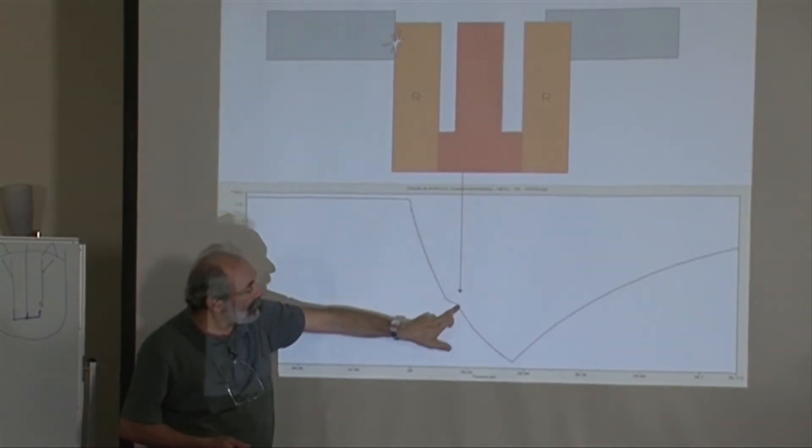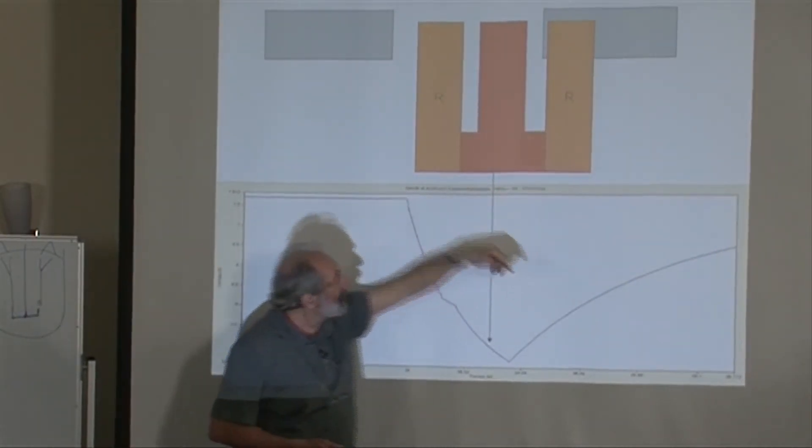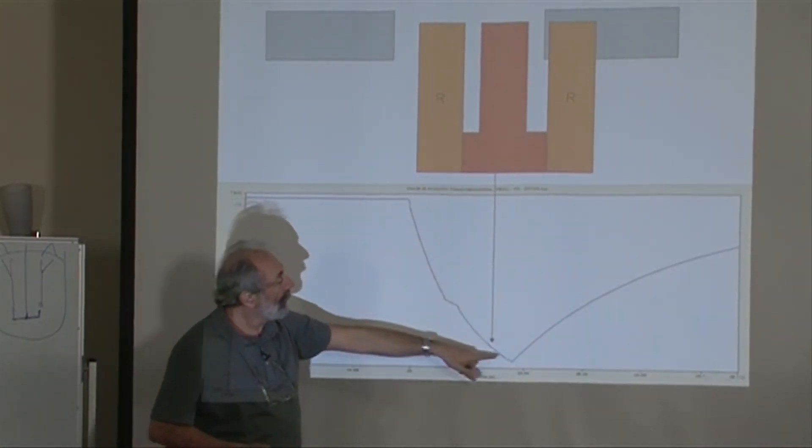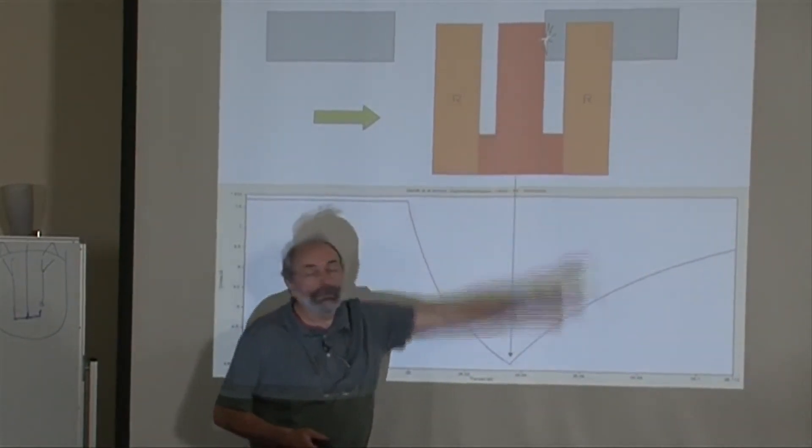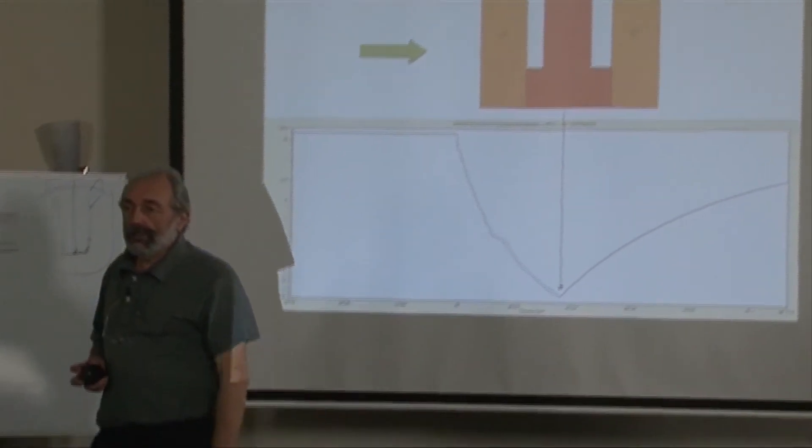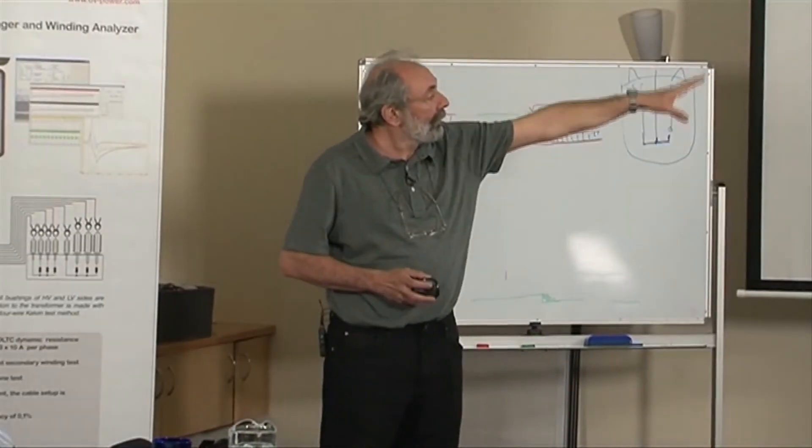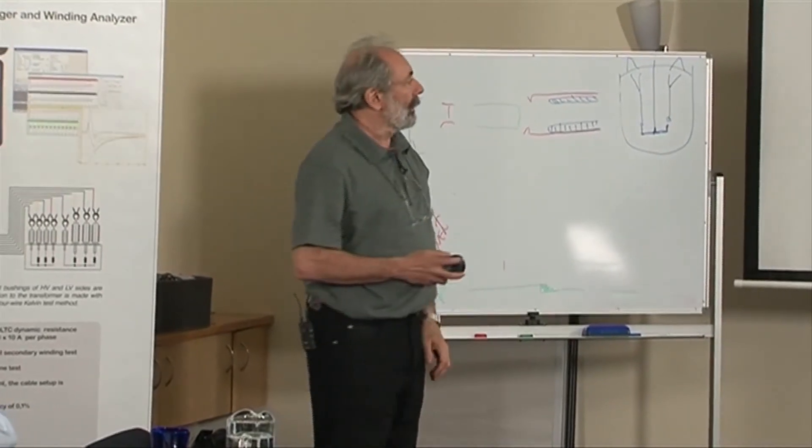When it separates, it continues going through only one resistor. So this is the same slope. Until the main contact makes with the next position. Now that it made, the current goes this exponential inductance type increase.